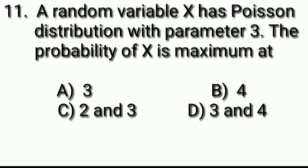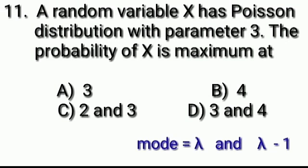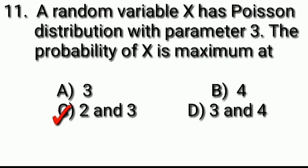Question number 11: A random variable x has a Poisson distribution with parameter 3. The probability of x is maximum at 3, and the maximum value occurs at 3 and 3−1 = 2.